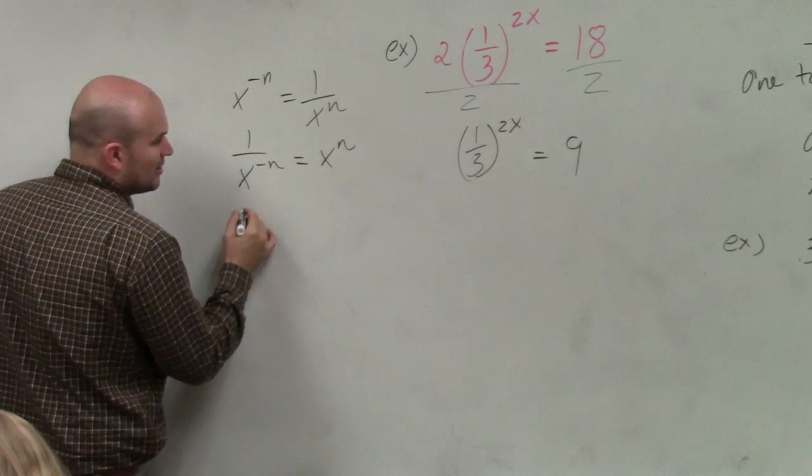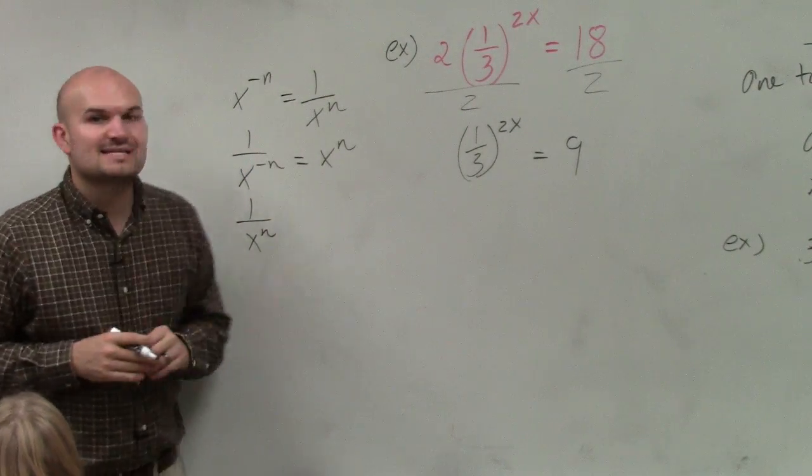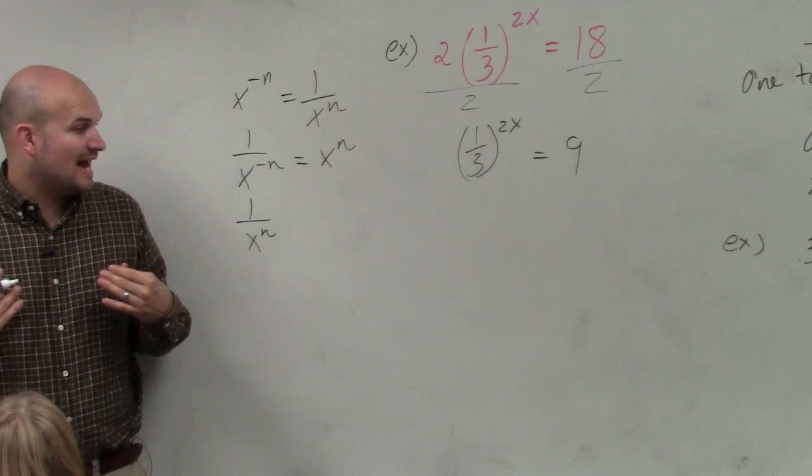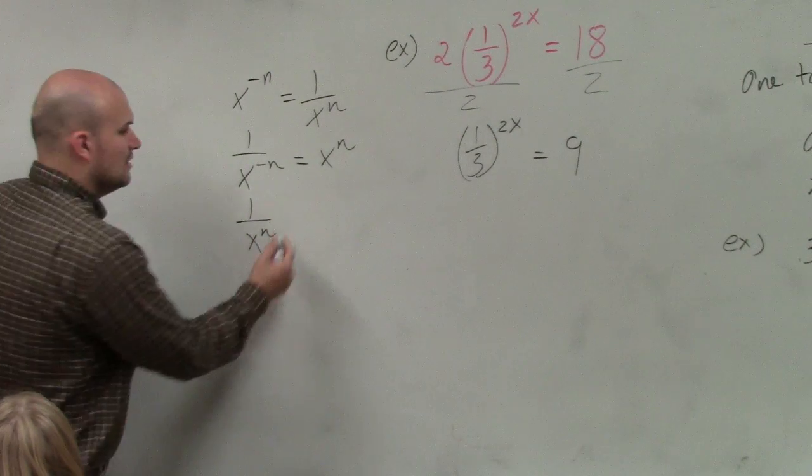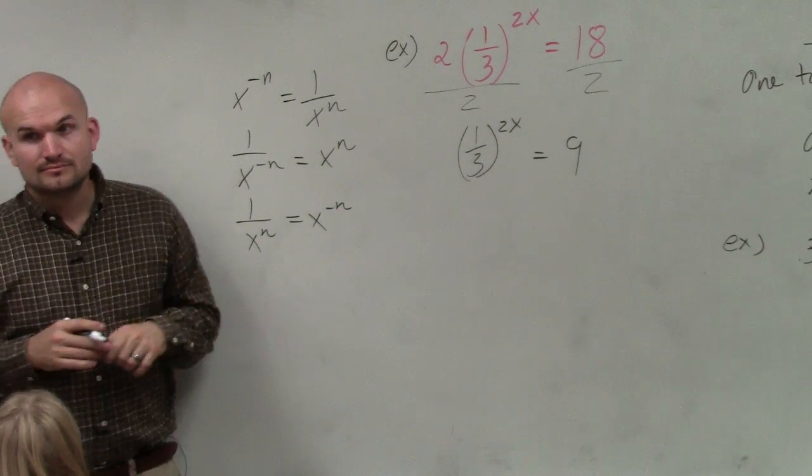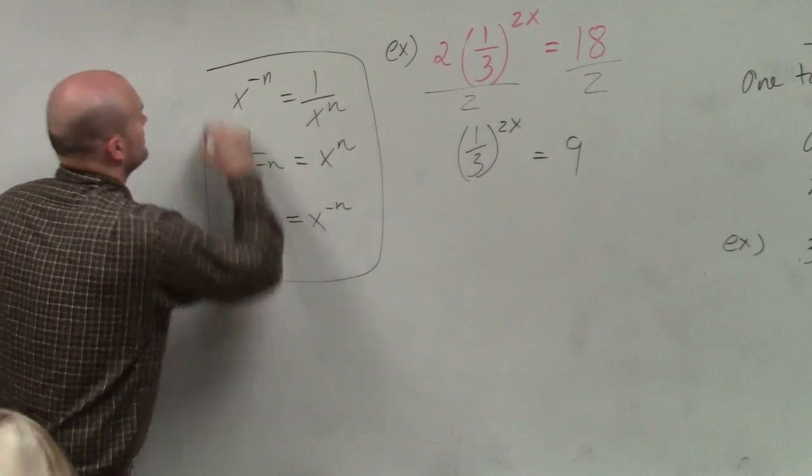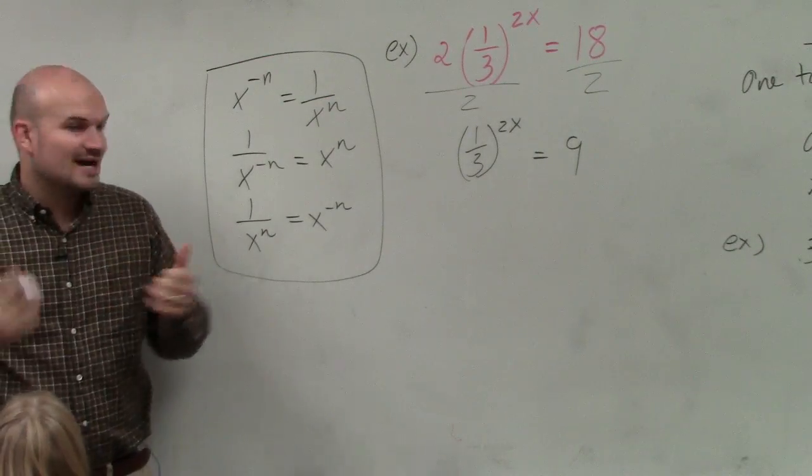And what's also important is if I just have 1 over x to the n, and I wanted to rewrite that without a fraction, then I would just use a negative exponent. These are rules of exponents that we've already gone over.